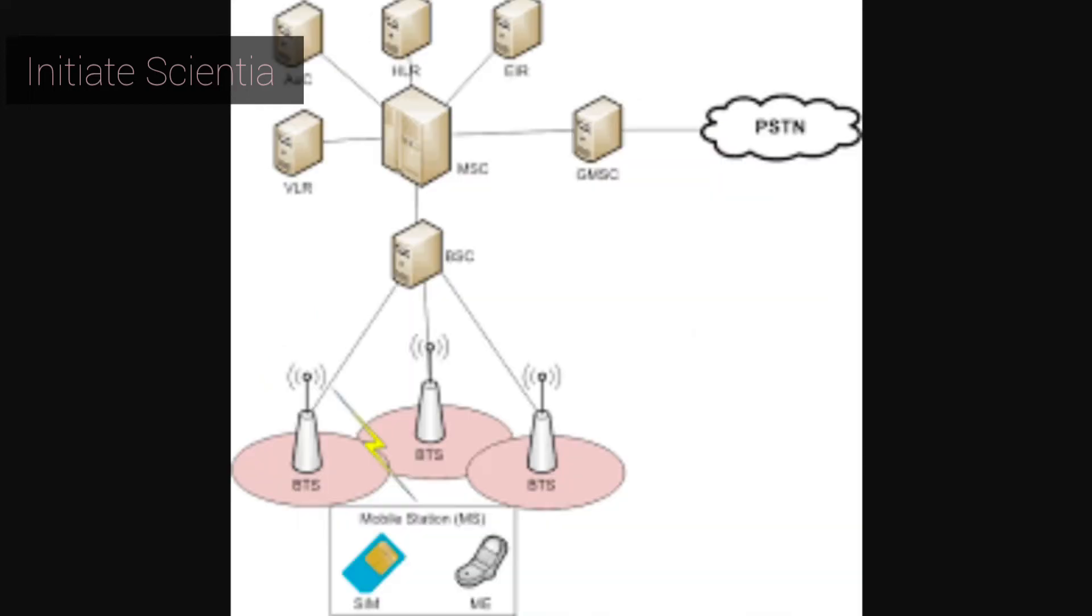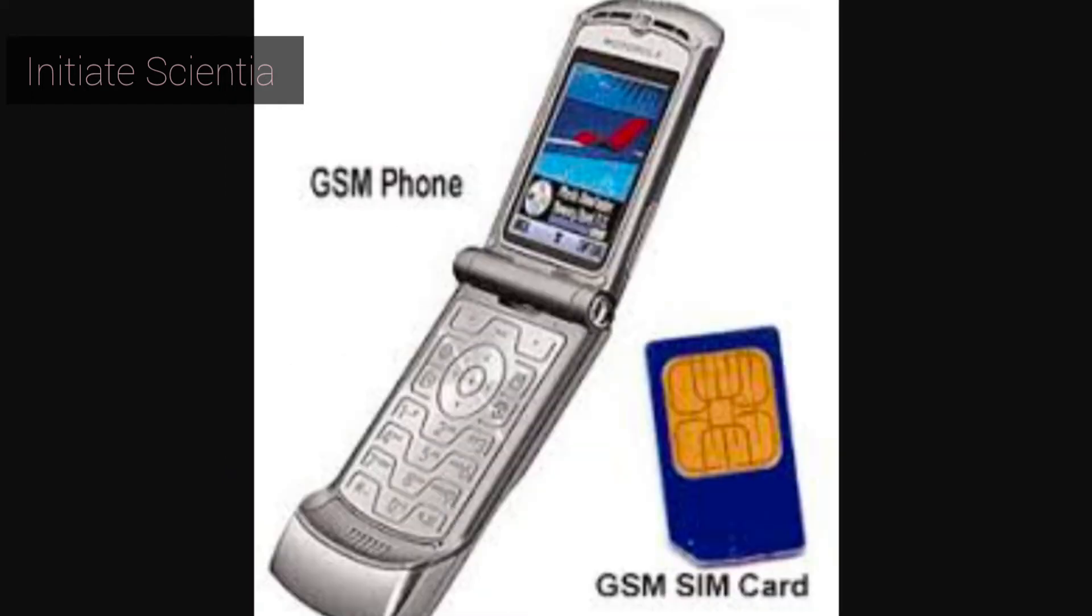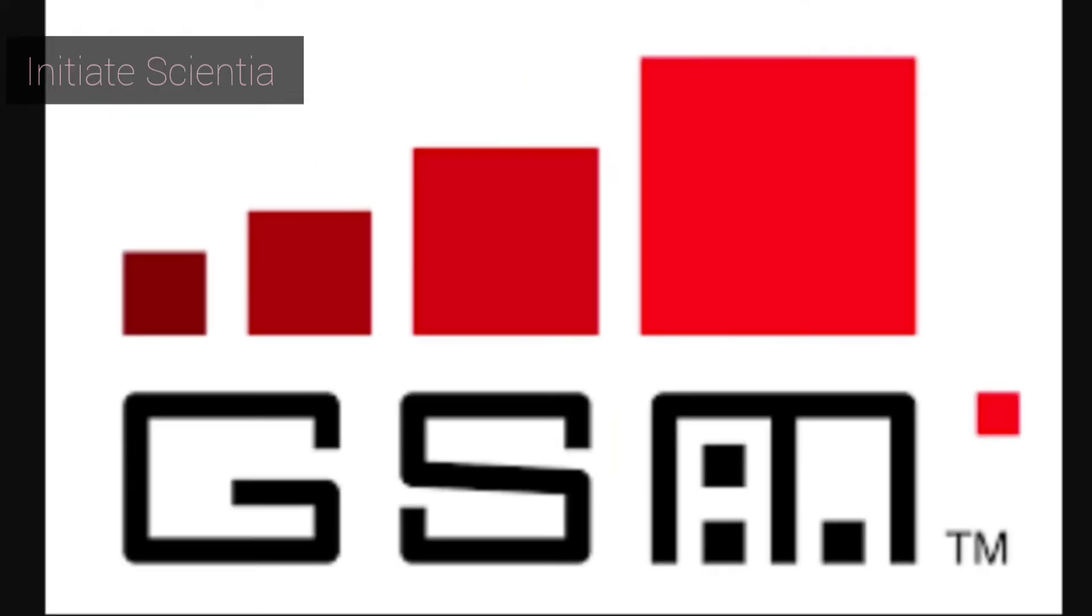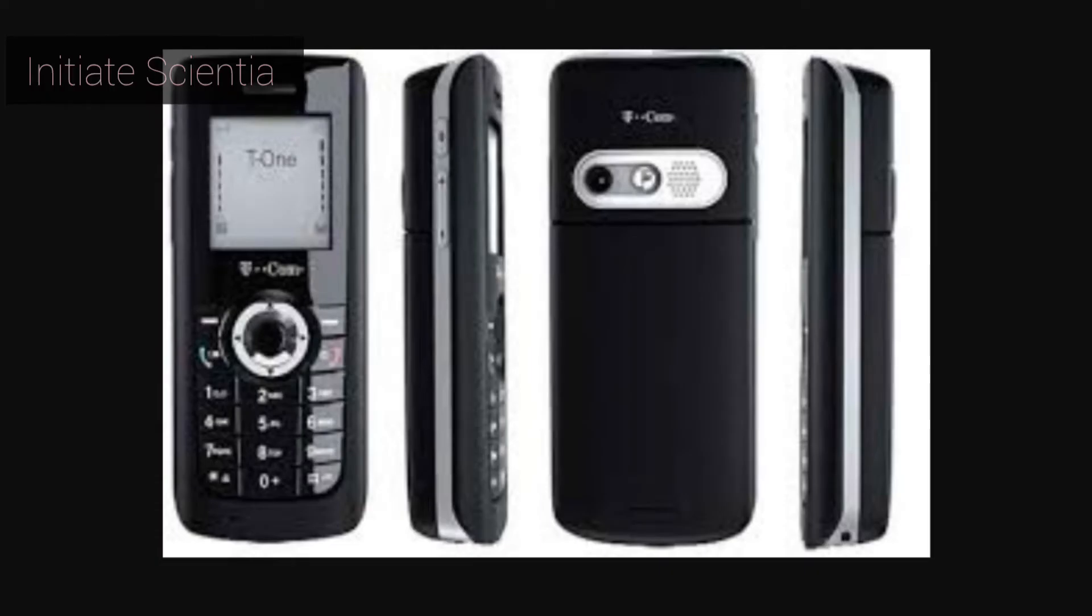GSM utilizes a cellular network, meaning that cell phones connect to it by searching for cells in the immediate vicinity. There are different cell sizes in a GSM network, such as macro, micro, pico, femto and so on. The coverage area of each cell varies according to the implementation environment.